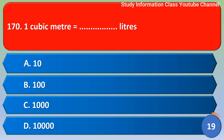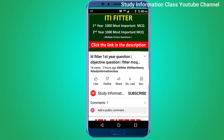Next question: one cubic meter is equal to how many liters? Option A: 10 liters. Option B: 100 liters. Option C: 1000 liters. Option D: 10,000 liters. The correct answer is Option C — 1 cubic meter is equal to 1000 liters.